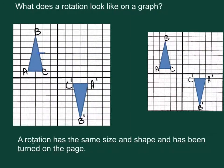A rotation has the same size and shape. It looks like it has just been turned on the page. We would say that this triangle has been rotated 180 degrees.